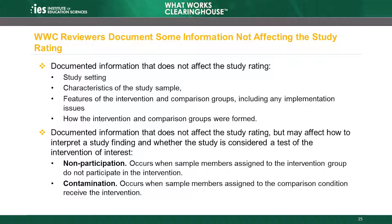Contamination occurs when sample members assigned to the comparison condition receive the intervention — this is sometimes referred to as crossover. If these sample members provide outcome data and are analyzed as comparison group members, contamination can lead to a smaller finding.